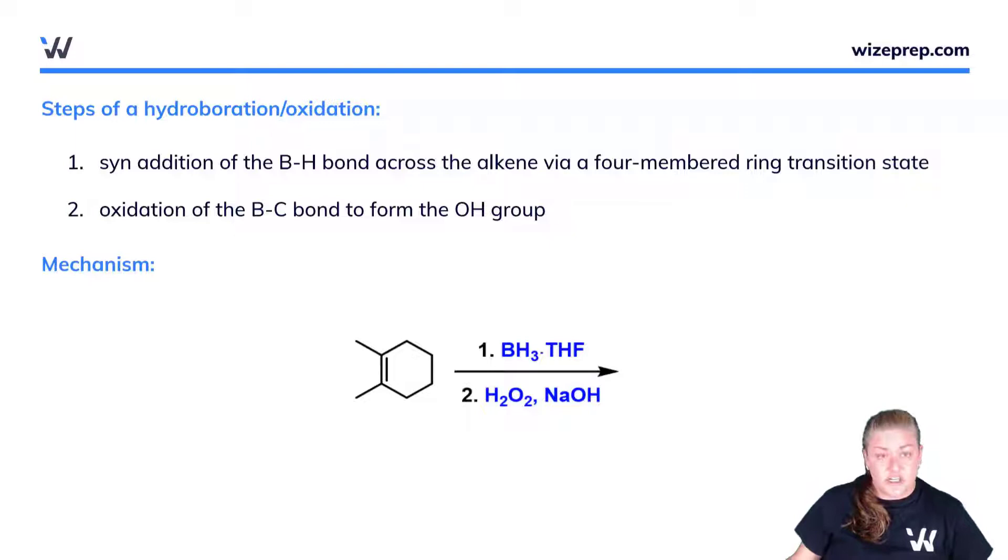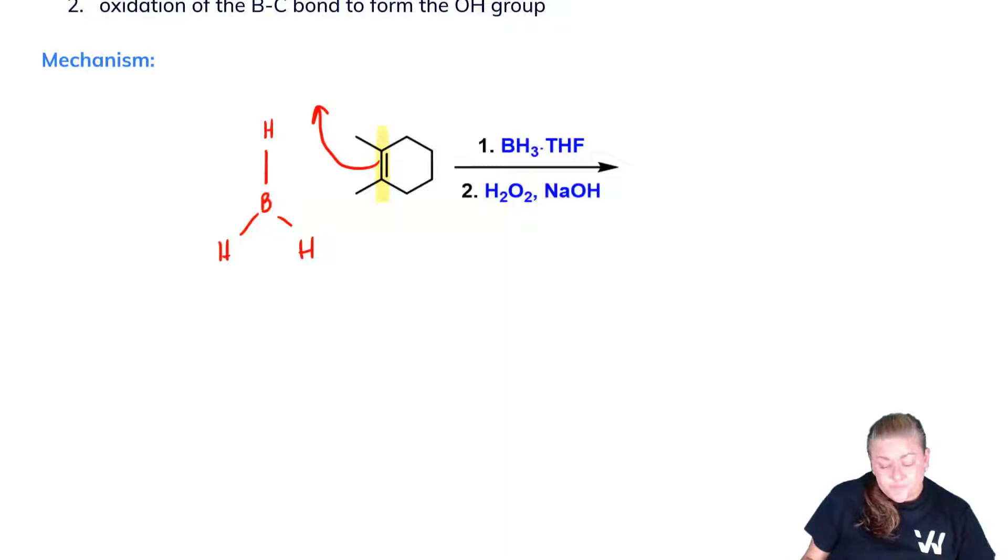It helps to see the addition of the H-B bond. We have an alkene here and borane like so. In this reaction, we get a four-membered ring transition state where we have attack of the alkene on an electrophilic hydrogen atom, and the boron attacks like so, making this four-membered ring intermediate.